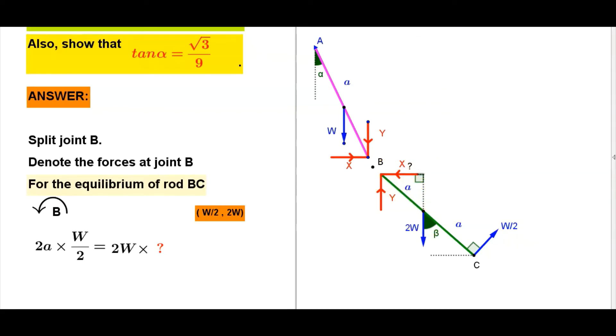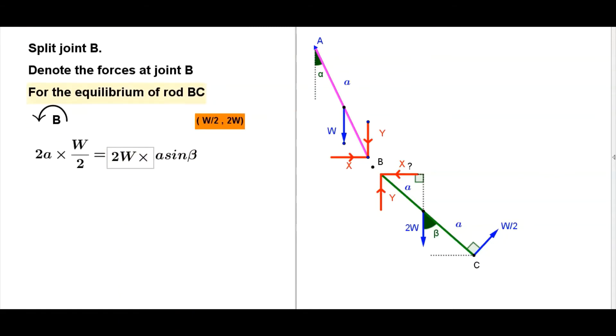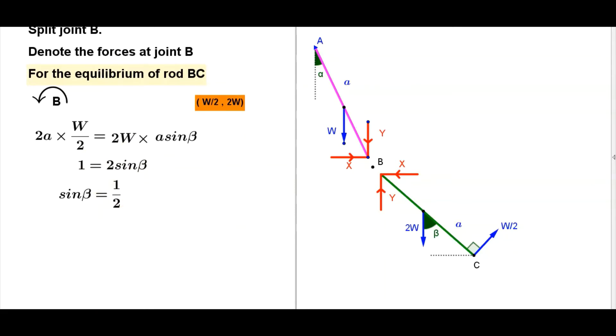Therefore 2a times W/2 equals 2W times a sin beta. When simplifying further, W will be cancelled from both sides, a cancelled, 2 and 2 cancelled. Therefore 2 sin beta equals 1, sin beta equals half. Therefore beta equals pi by 6.